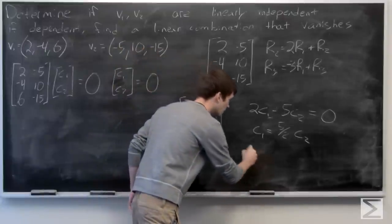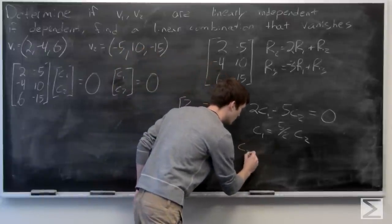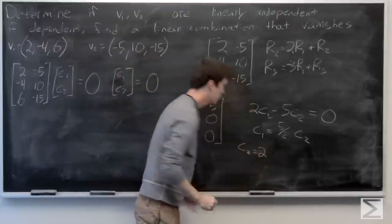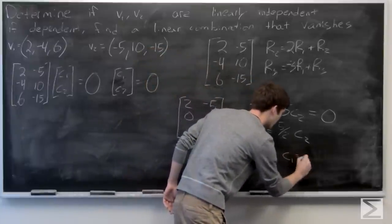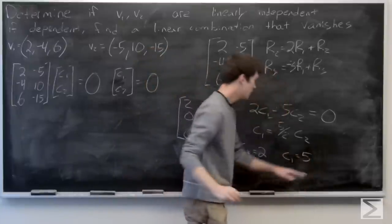We can go ahead and find one solution. If we let c2 equal 2, then that implies that c1 is equal to 5.